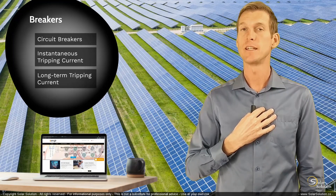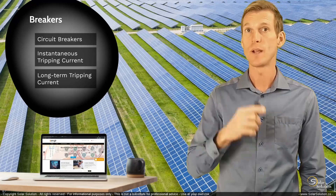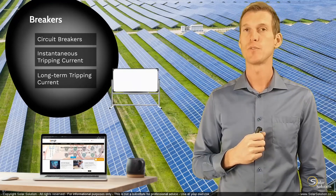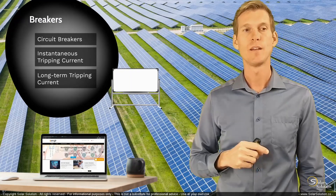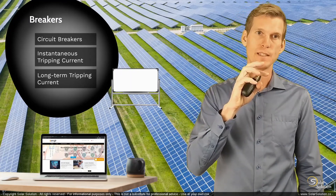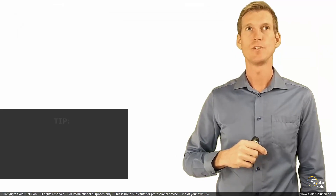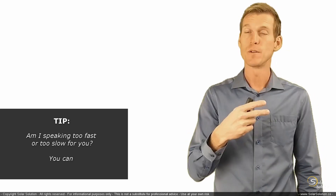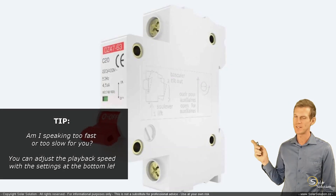In my opinion, this dual rating is a significant advantage of circuit breakers. I want to go to the whiteboard and dissect the typical circuit breaker to show which components are inside, and to explain the actual difference between the instantaneous and long-term tripping current ratings, as well as the two different mechanisms built inside one breaker.